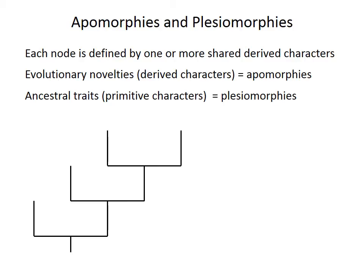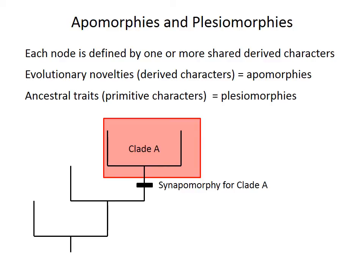Because cladograms are based on shared characters, each branching node is defined by one or more character state changes — a change from zero to one or one to zero in the character matrix, representing the evolution of a new feature, loss of a feature, or change in an anatomical characteristic. For example, clade A can be defined by an evolutionary novelty, or derived character, often marked by a box on the branch before the node. These novelties are called apomorphies, and this particular trait is a synapomorphy — a shared derived character — because it is shared by the common ancestor and all members of clade A, but is not found below that point on the tree.